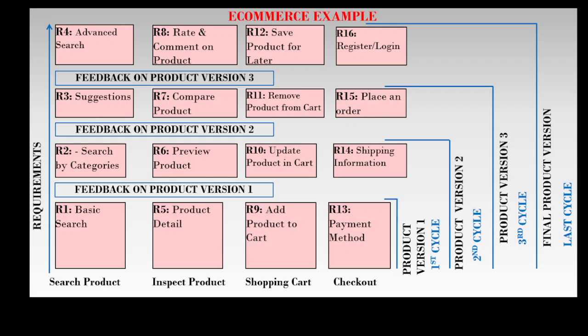Likewise, in the third cycle the third product version is created, not delivered, and feedback is received. In the last cycle the final product version is created, accepted, and delivered to the customer. Note that in this example each product version includes requirements from the four modules: search product, inspect product, shopping cart, and checkout. For example, the first product version includes basic search, product detail, add product to cart, and payment method from the four modules.